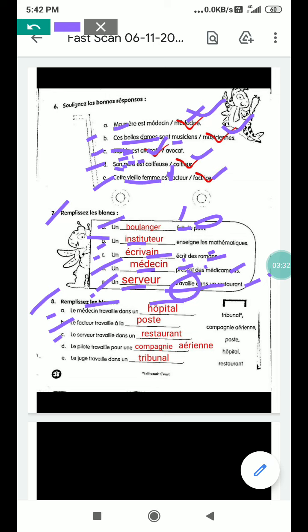And le serveur travaille dans le restaurant. The servant or waiter works in a restaurant. A pilot travaille pour une compagnie aérienne. The pilot works in airlines. Le juge travaille dans un tribunal. The judge works in a court.